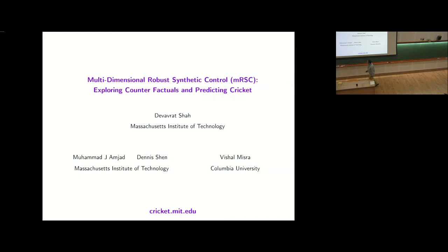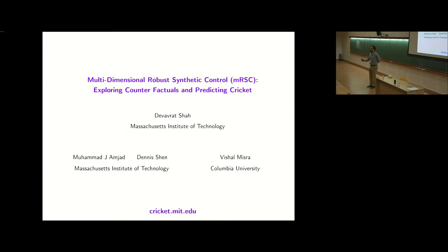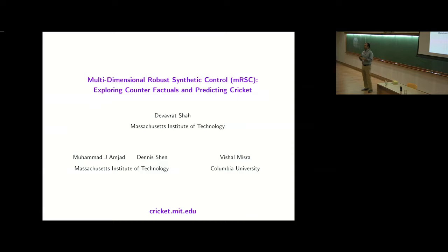In this talk, continuing on the theme of matrix estimation, I want to discuss a matrix estimation view of some of the causal inference methods. Causal inference has many shapes and forms; this is one specific view, especially in the context of trying to do causal inference with observational data.